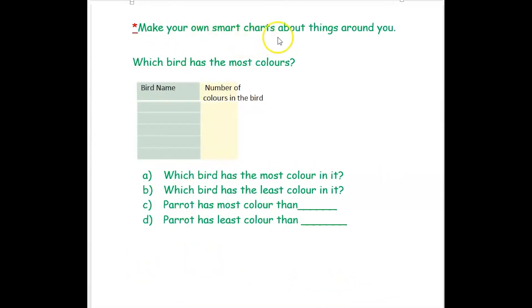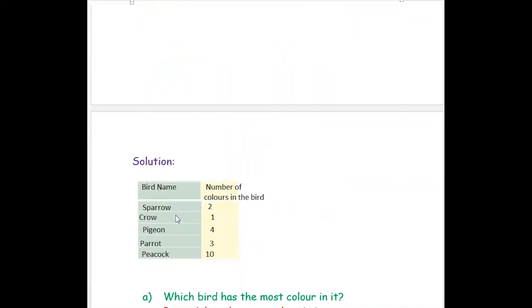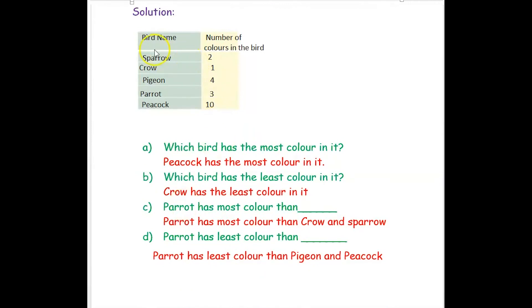Now let us see the next example: make your own smart charts about things around you. The question is: which bird has the most colors? They have given a table with bird name and number of colors in that particular bird. We have to fill the smart chart first and then answer the questions. Answering questions from a smart chart is the easiest way.